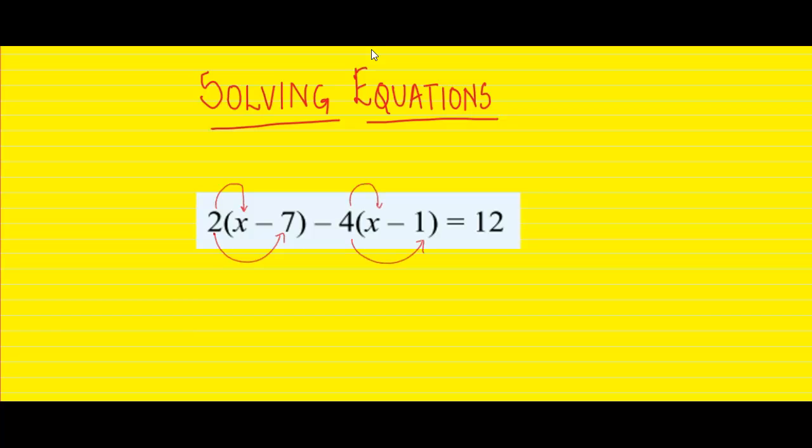So let's do. 2 into x is 2x. 2 into negative 7 is negative 14. Negative 4 into x is negative 4x. Negative 4 into negative 1 is positive 4 which is equal to 12.